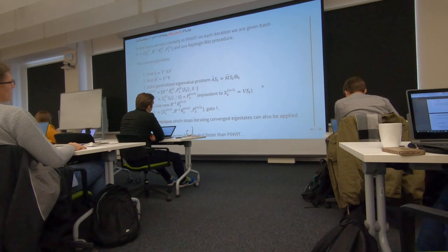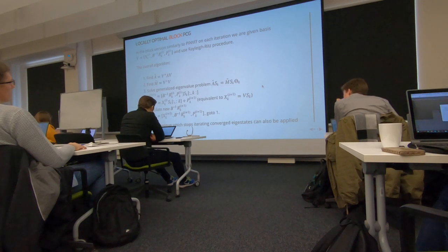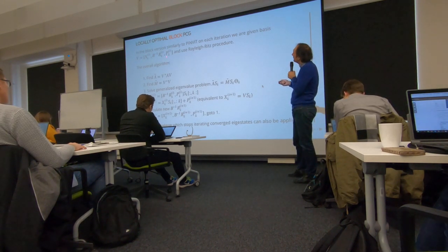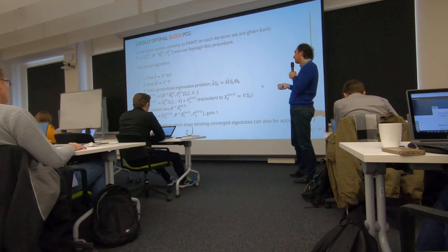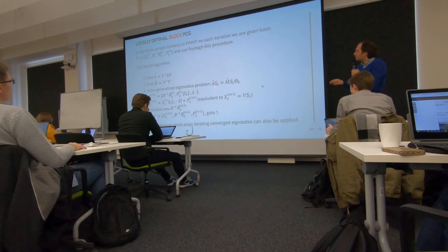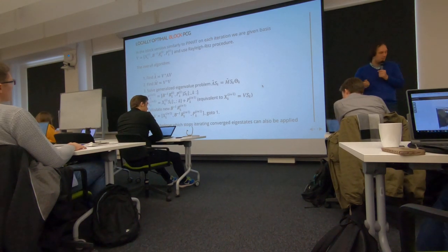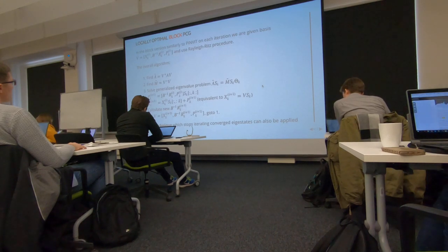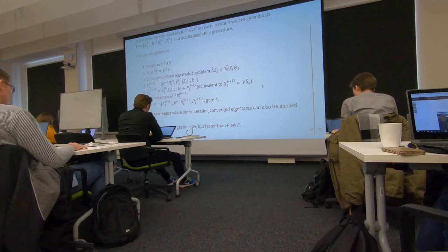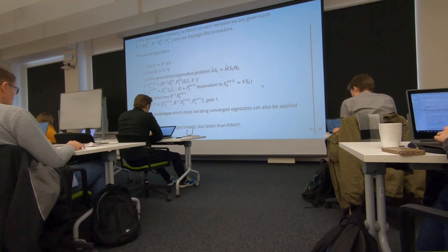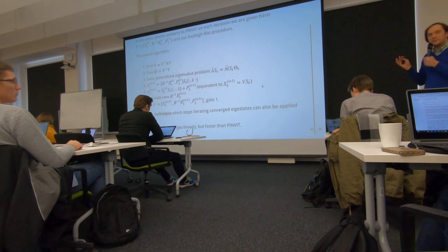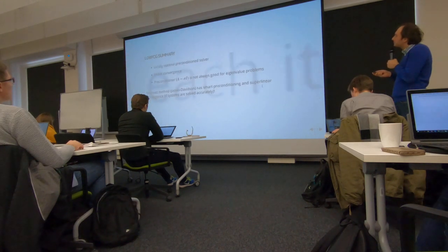And again, you do the same thing for the block case. Now, we get three block matrices going on. We have the previous, the preconditioned residual and the conjugate direction. And again, the implementation is not difficult. You do this. You update. You solve an eigenvalue problem in the subspace. And then, basically, the main computational burden goes here, besides computing the matrix-vector product. This is the block case. It has linear convergence in the worst case, but faster than the preconditioned inverse iteration, because we have larger subspaces. You can also use some so-called deflation, but this is a technical detail.